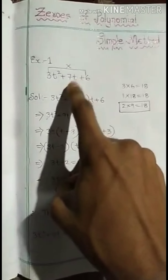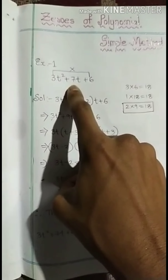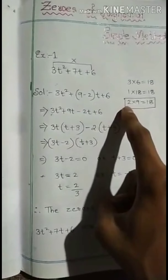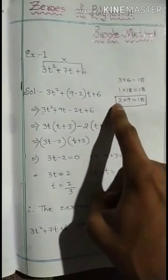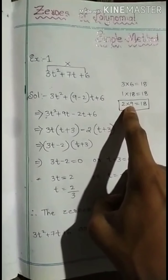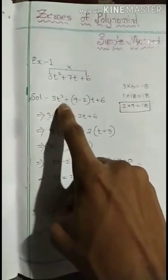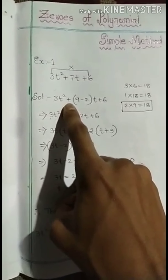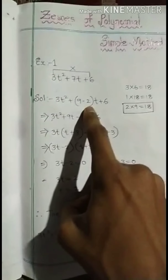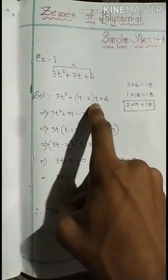The middle number is 7. If you check the factor pairs, 2 into 9 gives 18 and 9 minus 2 is equal to 7. So the split is 3t² plus 9t minus 2t plus 6.